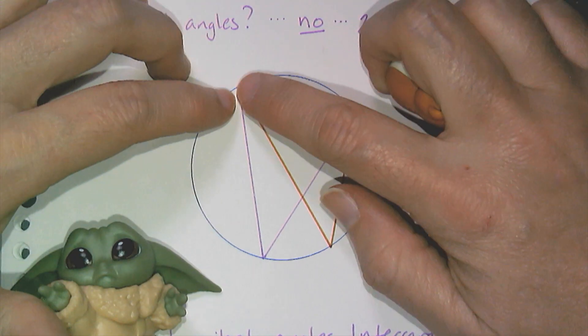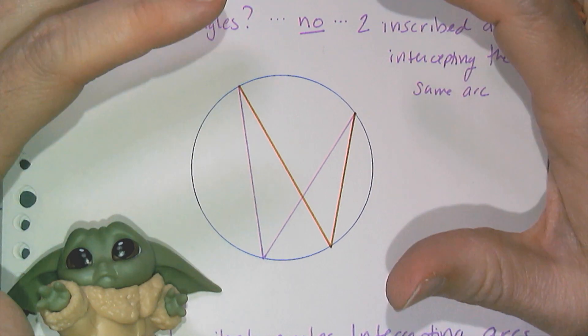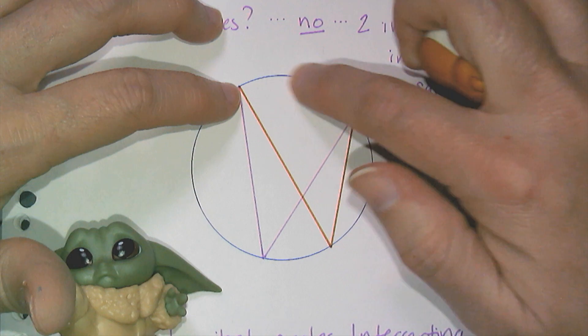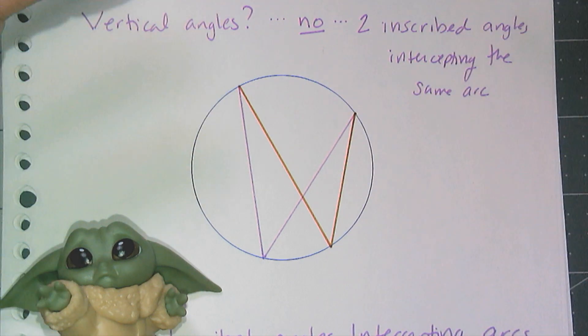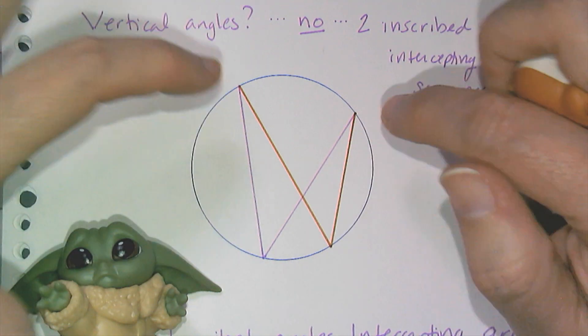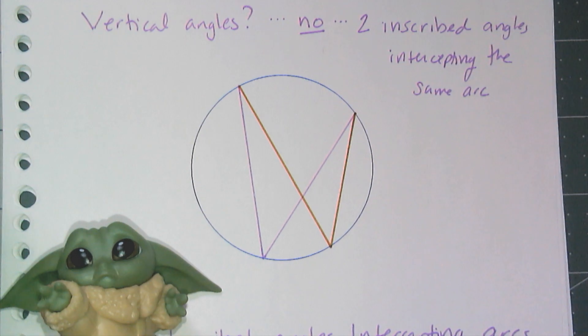So easy conjecture to prove, but what's important is this. So when you get a complex drawing, one of the things I want you to look for are arcs that have been intercepted by two different inscribed angles, because you know those angles have to be congruent, and it can help you solve your problem.